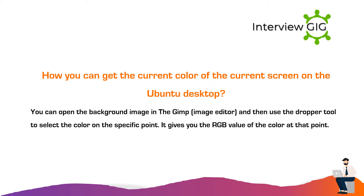How can you get the current color of the current screen on the Ubuntu desktop? You can open the background image in GIMP and then use the dropper tool to select the color at the specific point. It gives you the RGB value of the color at that point.